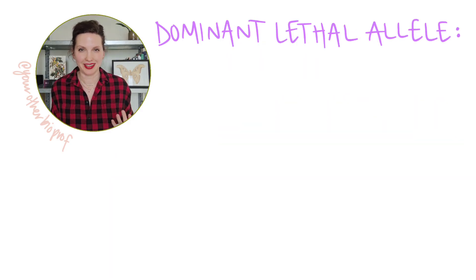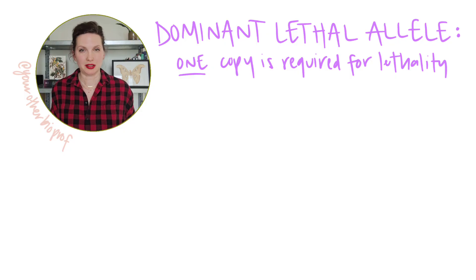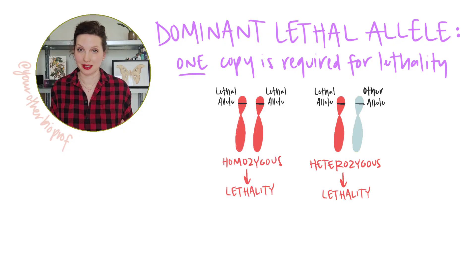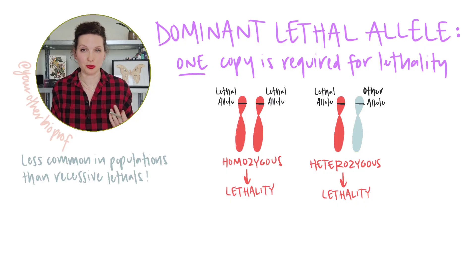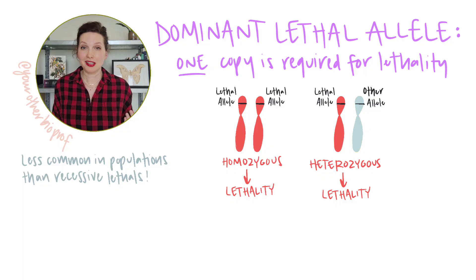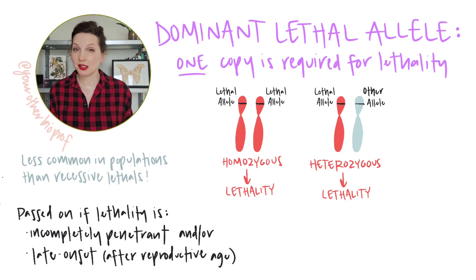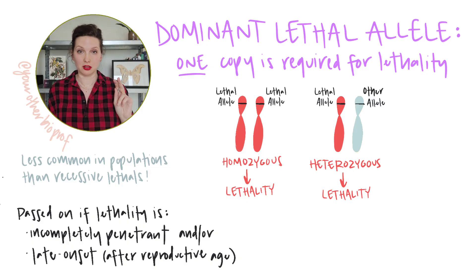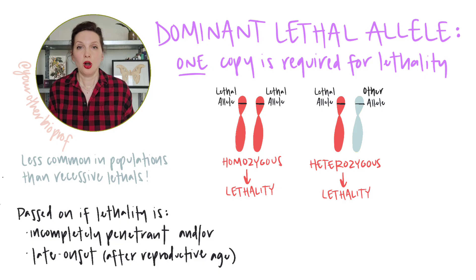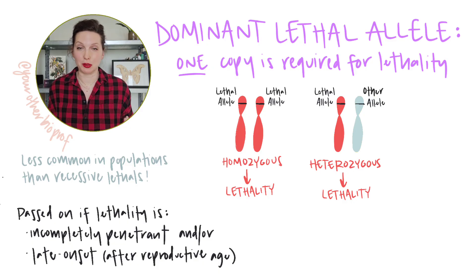So then what would a dominant lethal allele look like, and how many copies of that allele would be required for lethality? Just one. With a dominant lethal allele, the lethality would be seen in both the homozygous dominant and the heterozygous genotypes. Dominant lethal alleles are more rare because all individuals with a copy of that allele are susceptible to lethality. And if lethality occurs before reproductive age, that allele isn't being passed on to the next generation. Dominant lethal alleles are only passed on if the lethality is incompletely penetrant, meaning some individuals with the lethal allele don't express the lethal phenotype due to environmental factors or other aspects of their genetic background, or if the lethality is late onset, meaning it doesn't occur until after the individual has reached reproductive age.